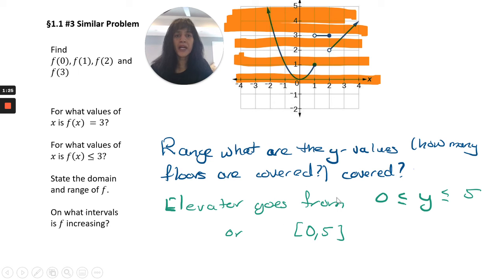My elevator goes all the way from floor 0 to floor 5 in this graph. Or as Stuart or WebAssign would want you to plug it in, it's 0 with a square bracket, because 0 is included, up to 5.